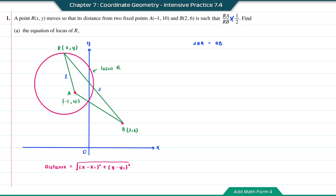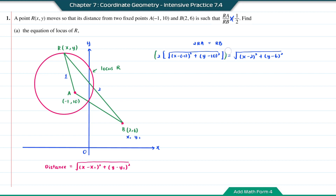To find the distance RA, we're going to let the coordinate A as X1, Y1. So 2 times the square root of (X minus negative 1) squared plus (Y minus 10) squared. And for the distance RB, it will be the square root of (X minus 2) squared plus (Y minus 6) squared. Next, we're going to square both sides to remove the square root. So 2 squared gives us 4, then (X plus 1) squared plus (Y minus 10) squared.